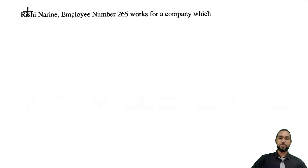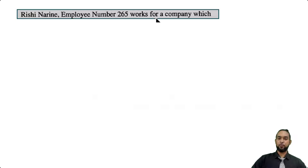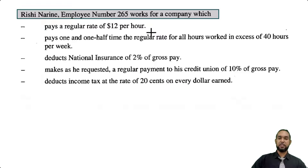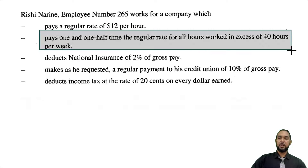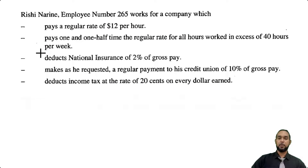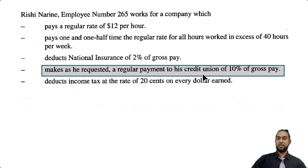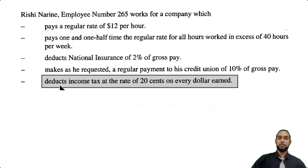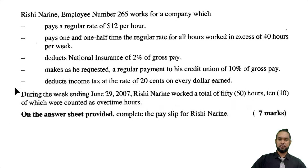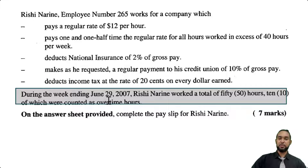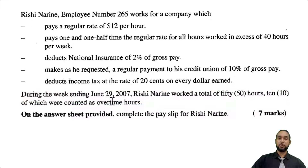Let's take a look at part B. Rishi Narayan, employee number 265, works for a company which pays a regular rate of $12 per hour, and pays one and a half times the regular rate for all hours worked in excess of 40 hours per week. It deducts national insurance of 2% of gross pay, makes a regular payment to his credit union of 10% of gross pay as requested, and deducts income tax at the rate of 20 cents on every dollar earned. During the week ending June 29, 2007, Rishi Narayan worked a total of 50 hours, 10 of which were counted as overtime.